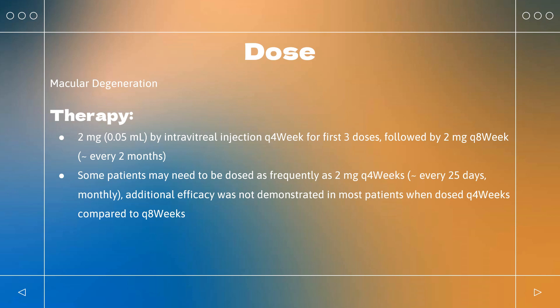Diabetic macular edema (DME). Eylea: 2 mg (0.05 ml) administered by intravitreal injection every 4 weeks for 5 doses, followed by 2 mg every 8 weeks. May be dosed as frequently as every 4 weeks; however, additional efficacy was not demonstrated when dosed every 4 weeks compared to every 8 weeks. Some patients may need every 4-week (monthly) dosing after the first 20 weeks (5 months). Eylea HD: 8 mg (0.07 ml of 114.3 mg/ml) by intravitreal injection every 4 weeks (Q28 days ± 7 days) for the first 3 doses, followed by 8 mg every 8–16 weeks (± 1 week).